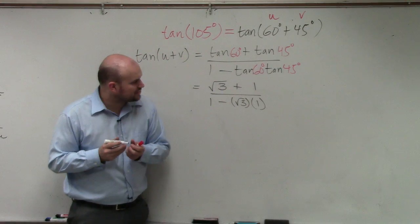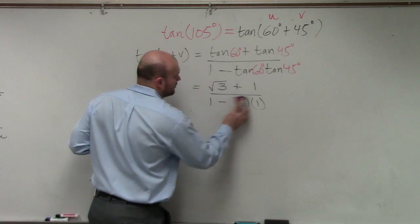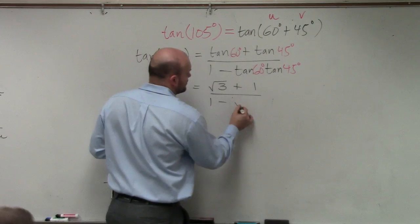So anyways, we know that square root of 3, this is just going to equal, instead of square root of 3 times 1, we know that that's just going to give you the square root of 3.